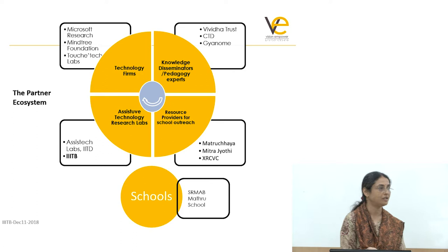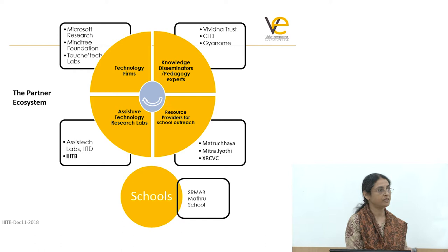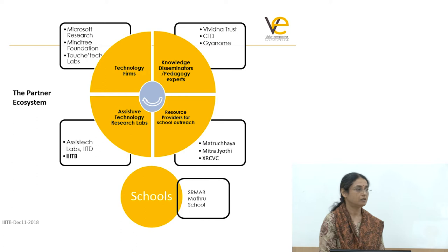We decided that to move forward, we have to collaborate with everybody — ensure that everybody knows what the others are doing. We found that many NGOs are working in this space, resource providers like Matri Chaya, Mitra Jyoti, and XRCBC have resources, so we work with them on teacher training programs. For technology firms, we are creating partnerships to develop the technologies we've identified. We are a one-year-old organization with just one or two people, so we collaborate with technology firms to come up with a workable model.